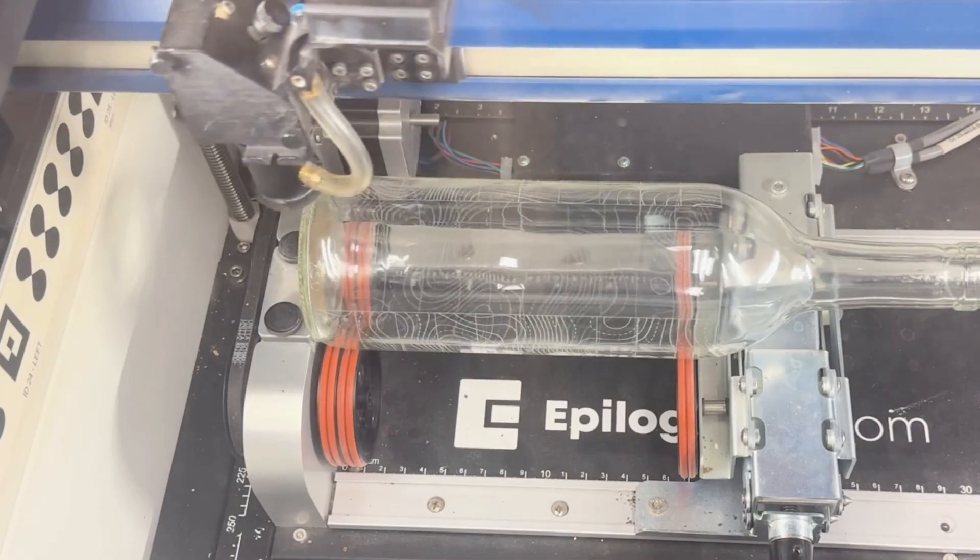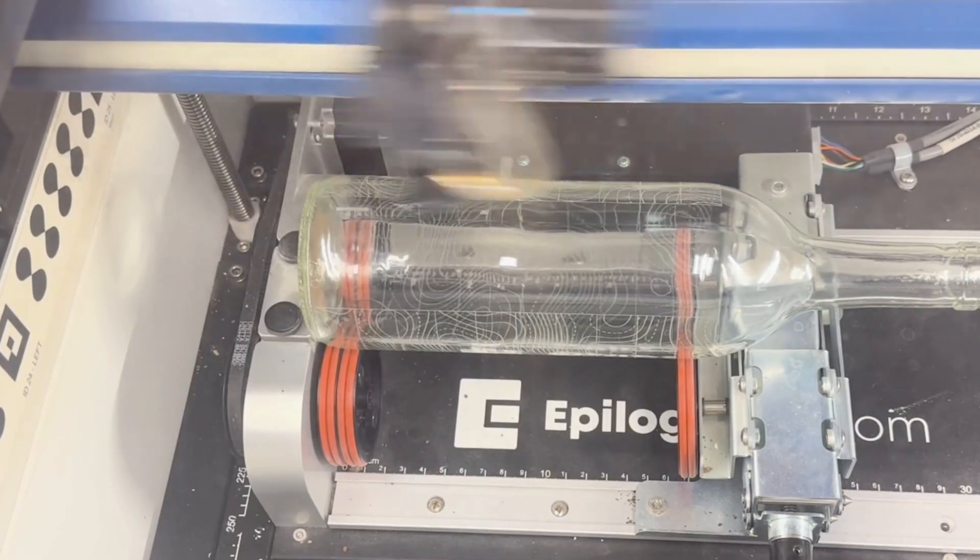So now we'll just hit go and we'll start engraving around that centering point. Let's see how it comes out.